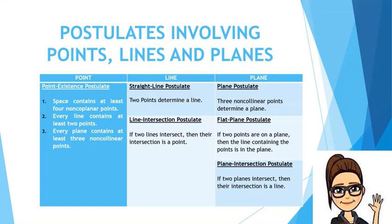Three, every plane contains at least three non-collinear points. For lines, we have two postulates: the straight line postulate, which states that two points determine a line; and the line intersection postulate, which states that if two lines intersect, then the intersection is a point. For planes, we have three postulates: the plane postulate — three non-collinear points determine a plane; the flat plane postulate — if two points are on a plane, then the line containing those points is in the plane; and the plane intersection postulate — if two planes intersect, then the intersection is a line.